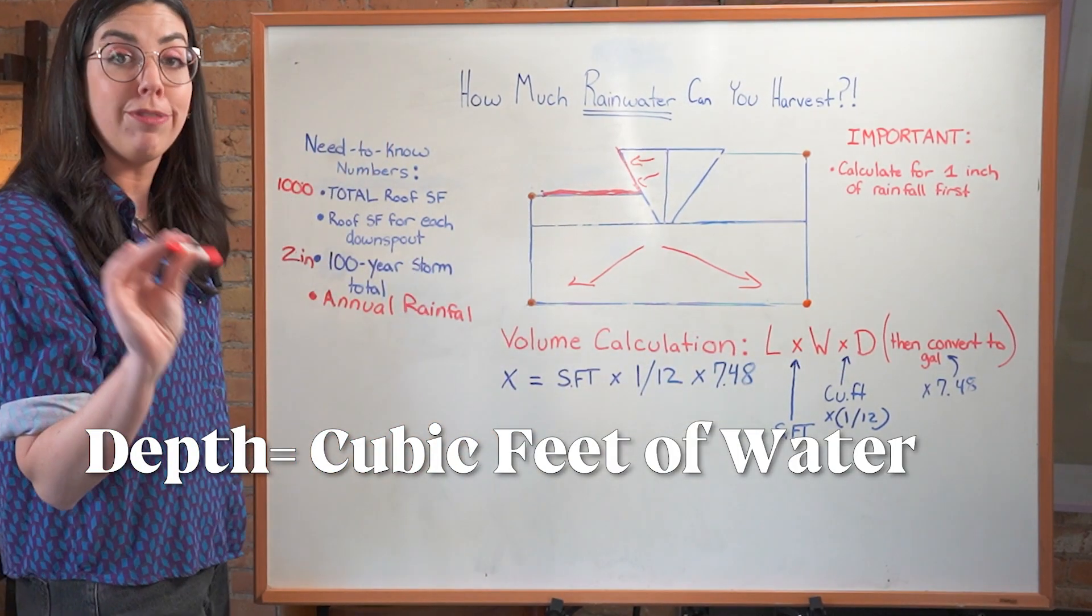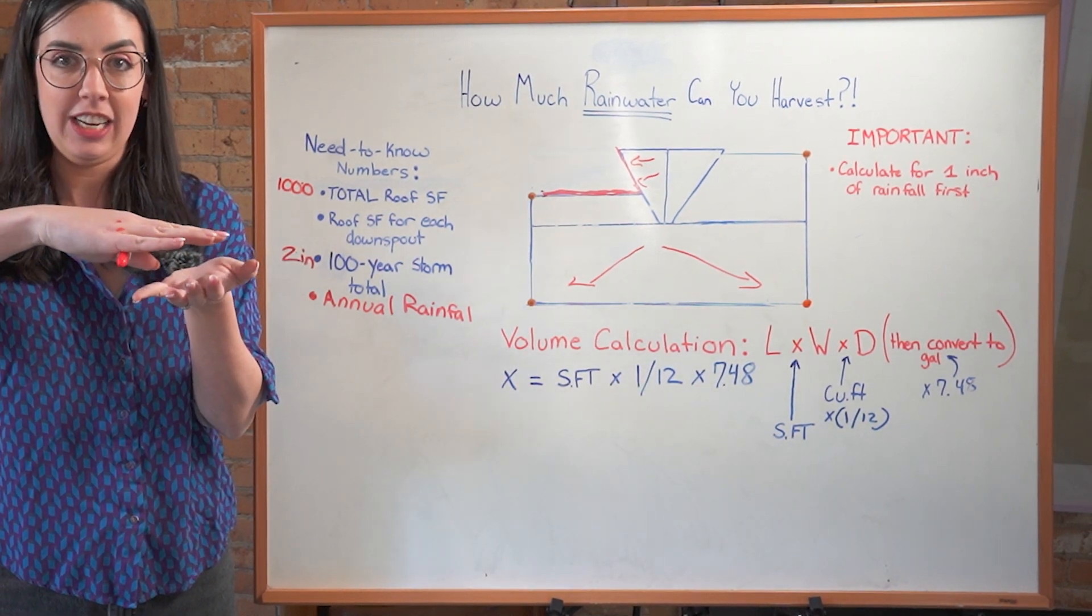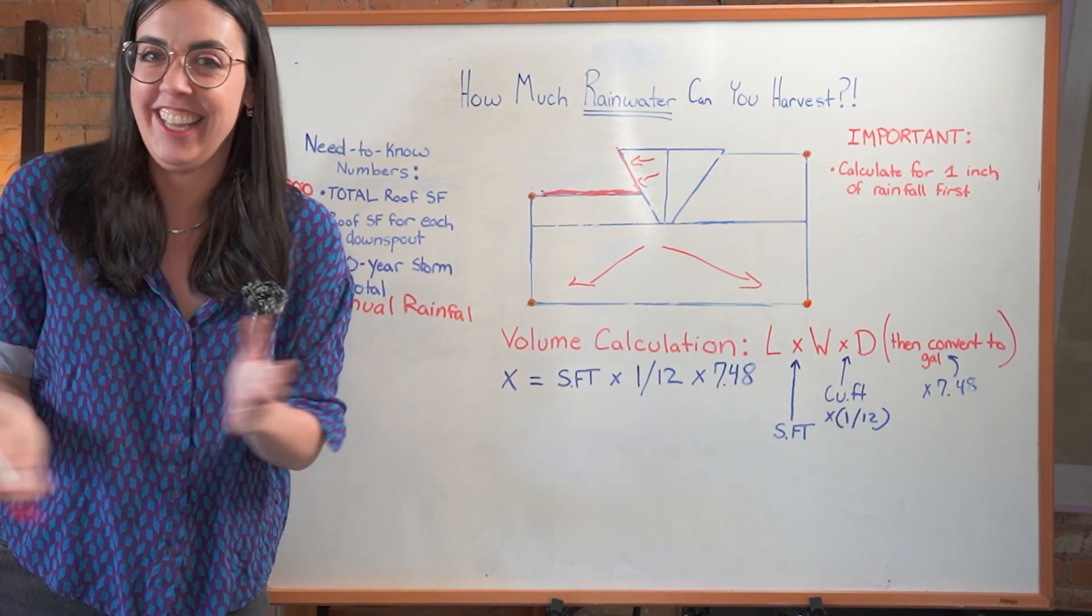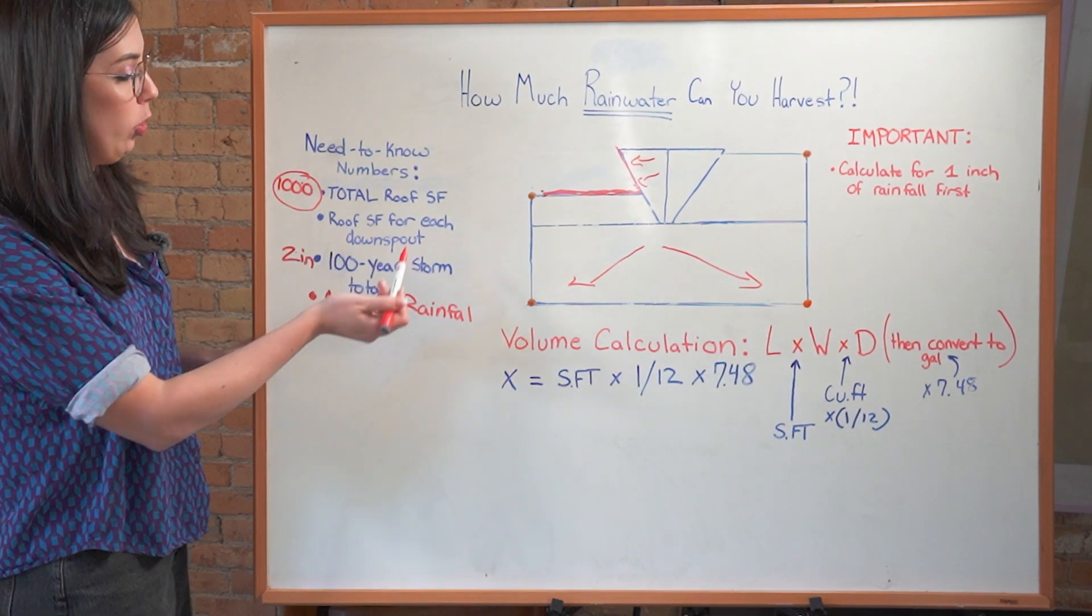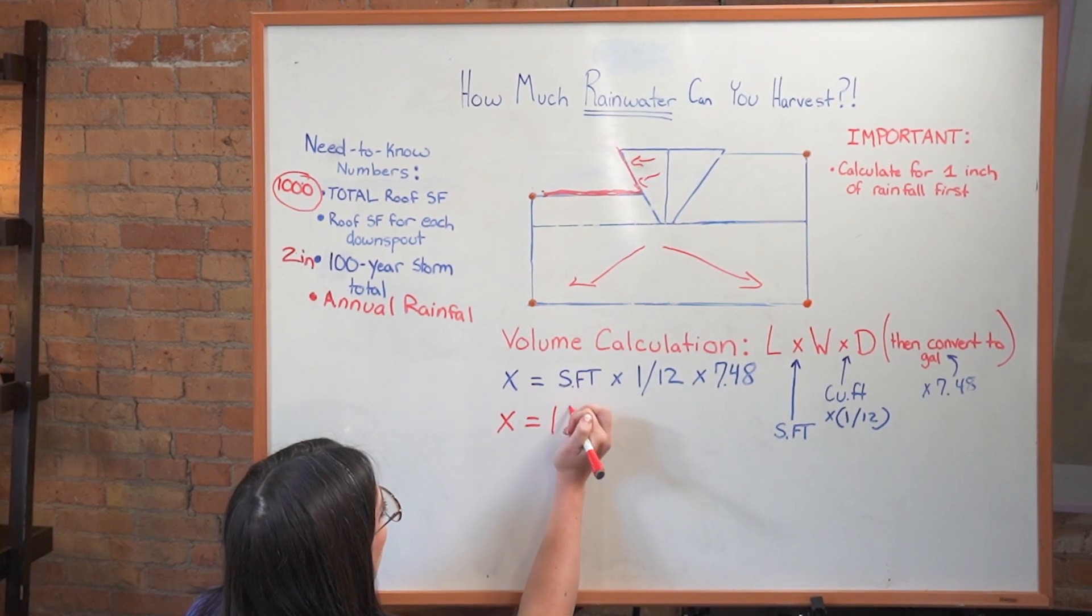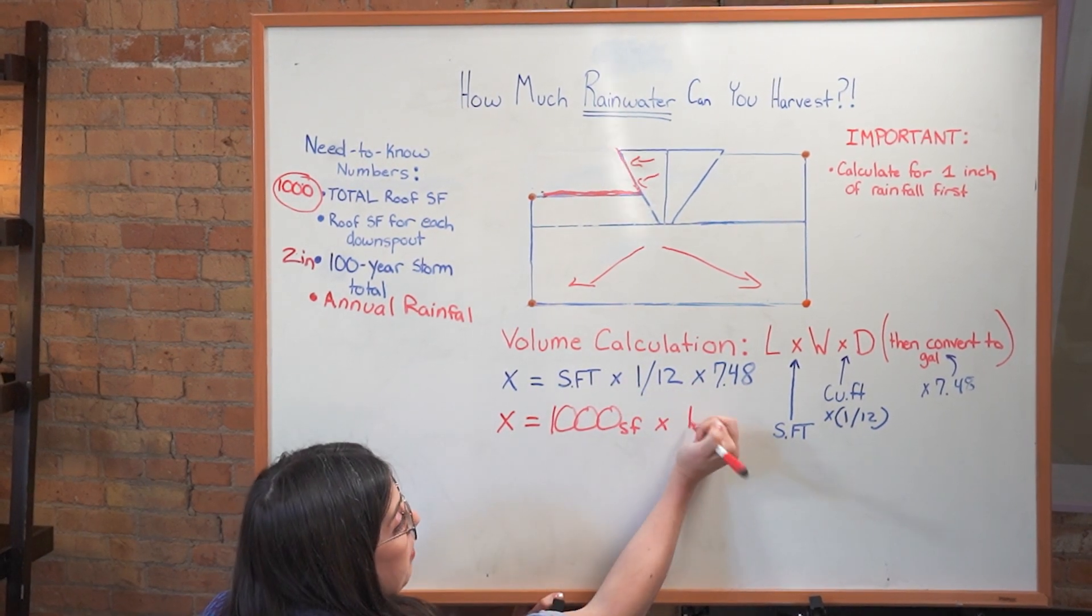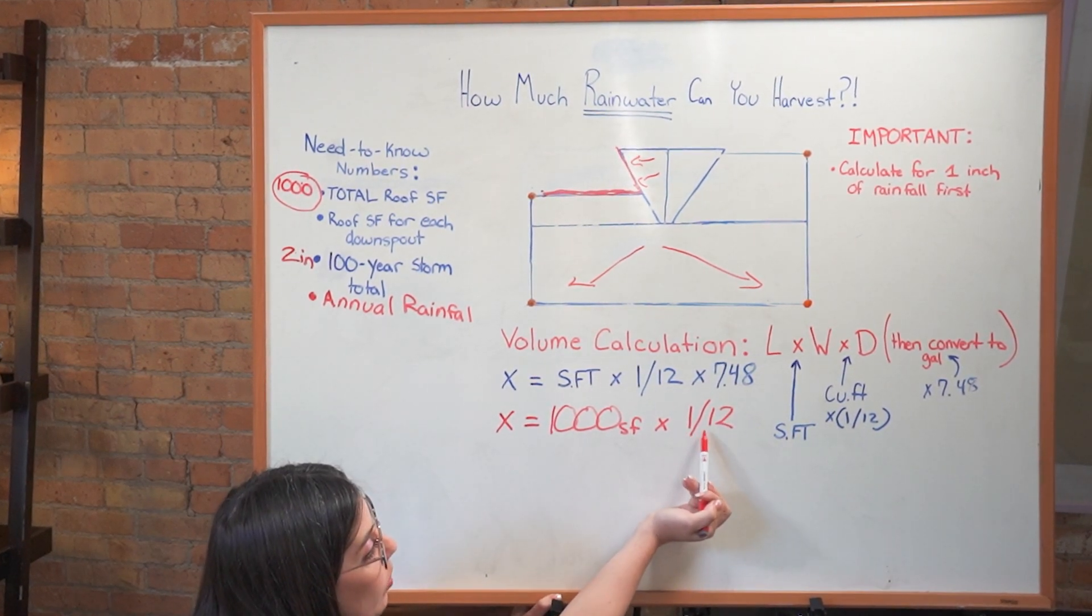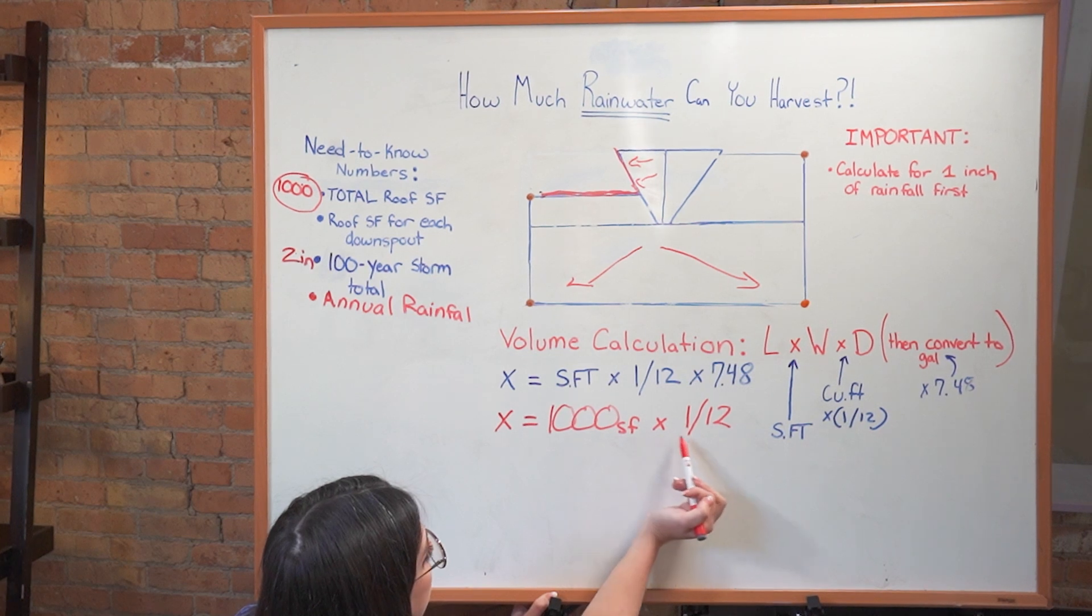From there, depth is going to be, we're starting with cubic feet of water. If you imagine your roof like a flat plane, length times width, one inch of water has now landed on it. That's what we're calculating in cubic feet, and then we're going to convert that to gallons at the end. Again, moment of silence for imperial measurements. So in this case, using 1000 square feet as the total roof volume, total this number X equals 1000 square feet times, and this is the same every time, times 1 over 12. That's 1 inch of rain. We're dividing 1 inch by 12 because there are 12 inches in a foot. And this is what converts it to cubic feet. So 1000 square feet times 1 over 12.